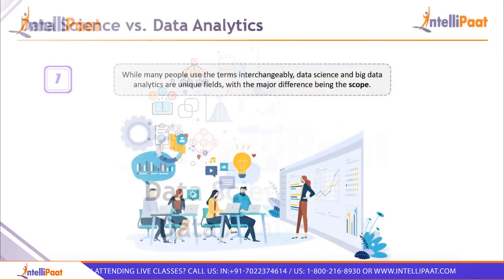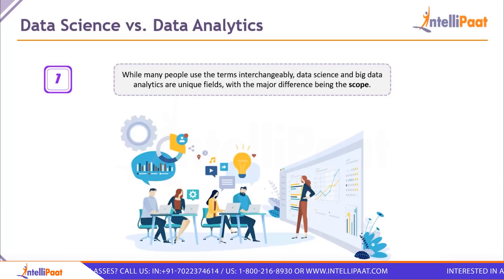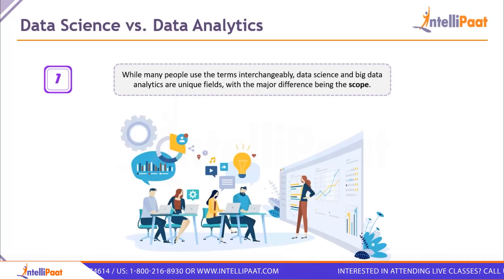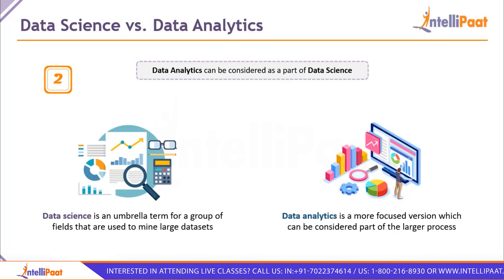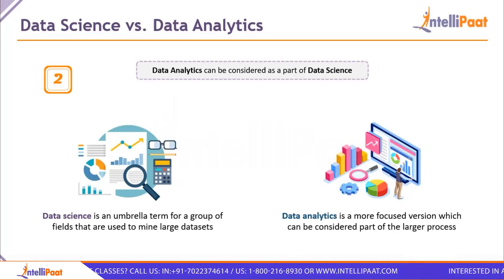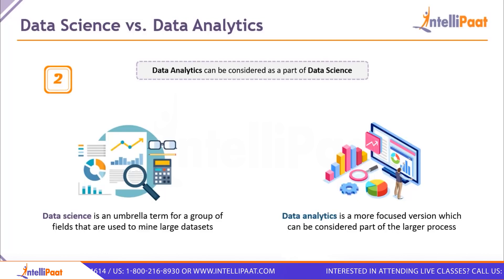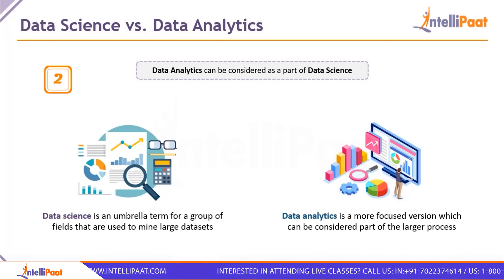The main difference between data science and data analytics is the scope. Data science spreads its wings very widely — we can consider data analytics to be a part of data science. Data science is an umbrella term for a group of fields used to mine large data sets and drive meaningful insights. Data analytics is a more focused version, a larger part of the entire process, where data collected by data scientists is used by the analytics team to do visualizations and analyze trends.